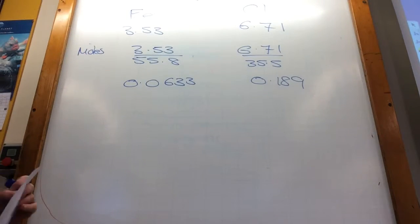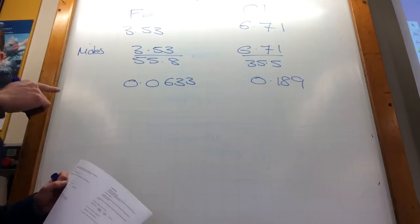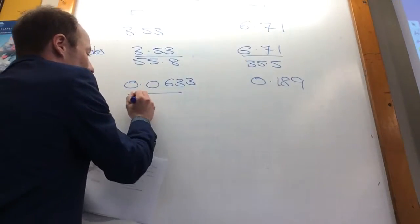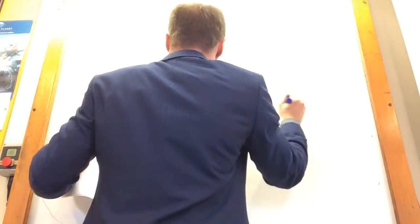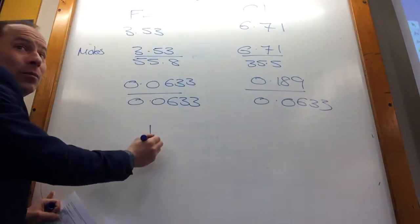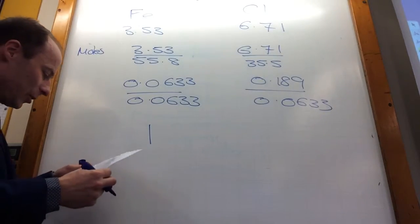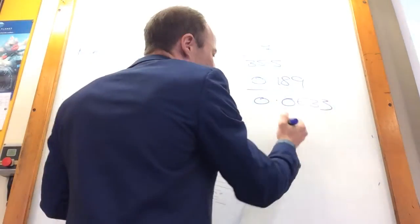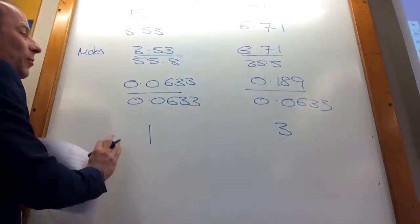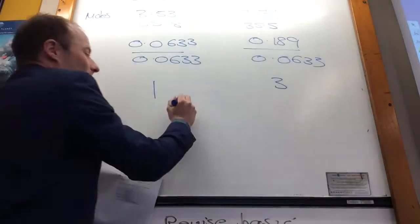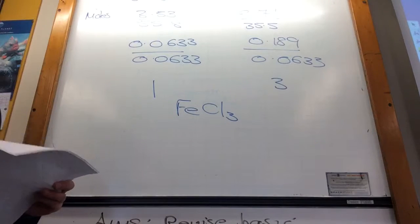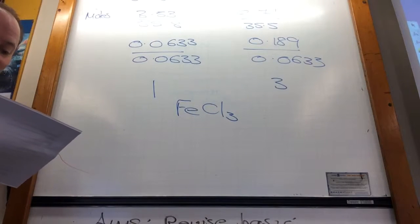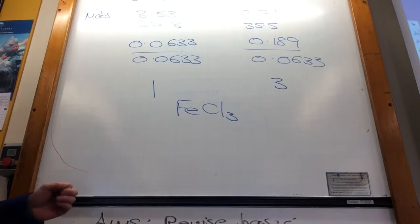I need to get rid of this. So I divide through by the smallest one, which is 0.0633. That would obviously become 1, and if you do that, that becomes 2.99, which is 3. So the formula is FeCl3. That's the empirical formula. That's all you can find.